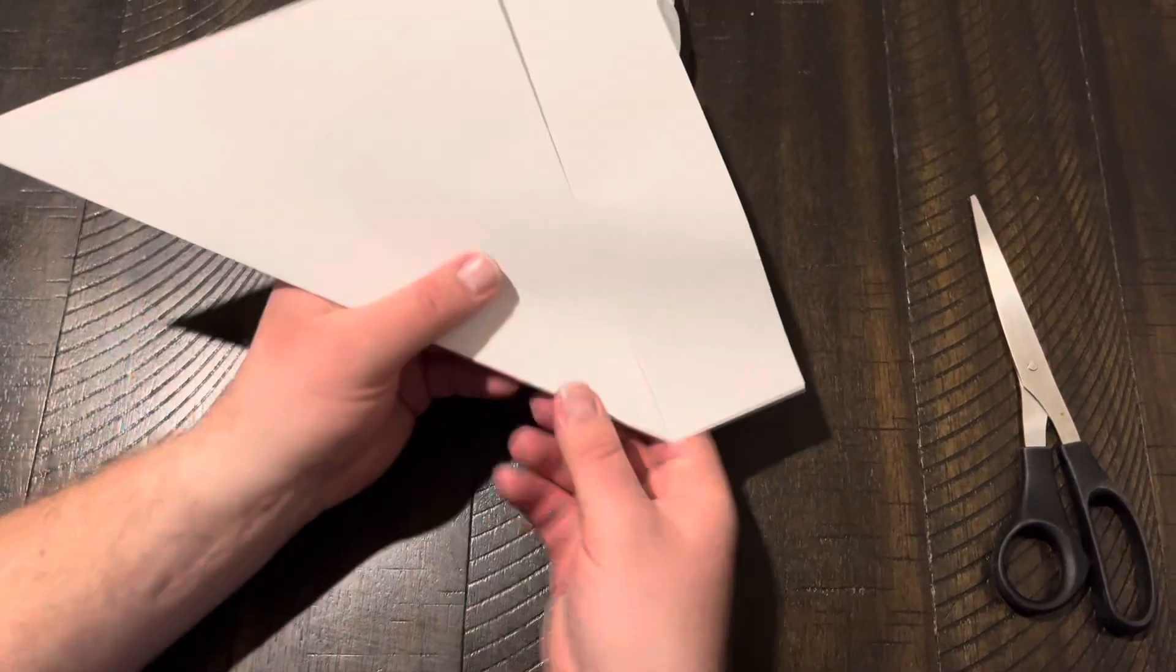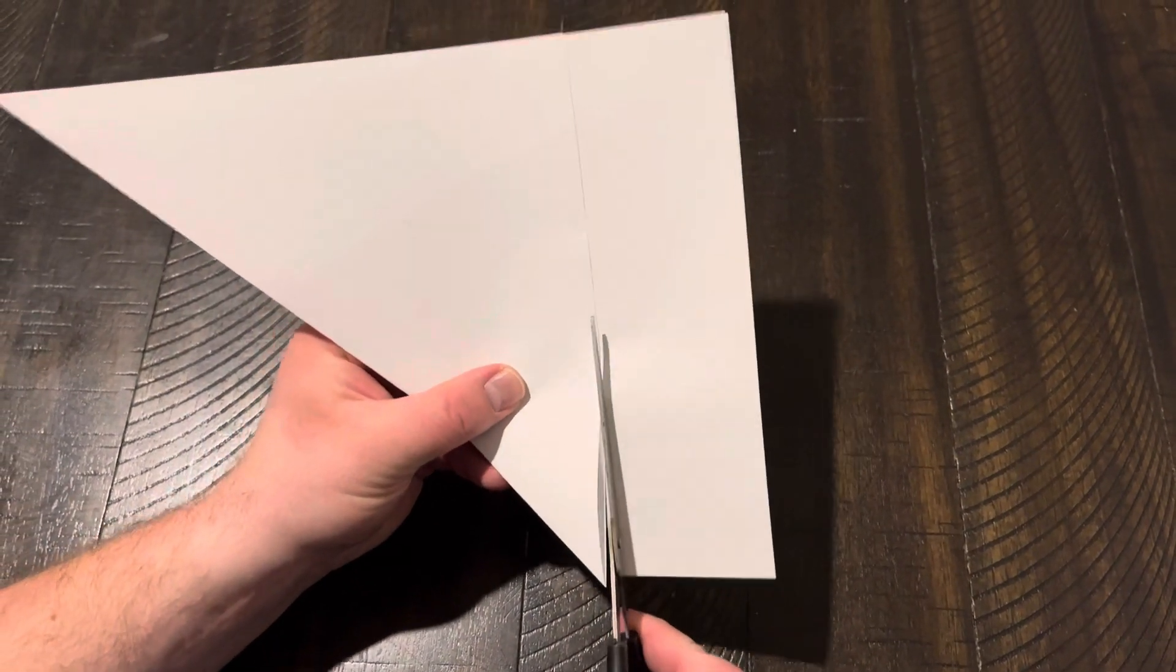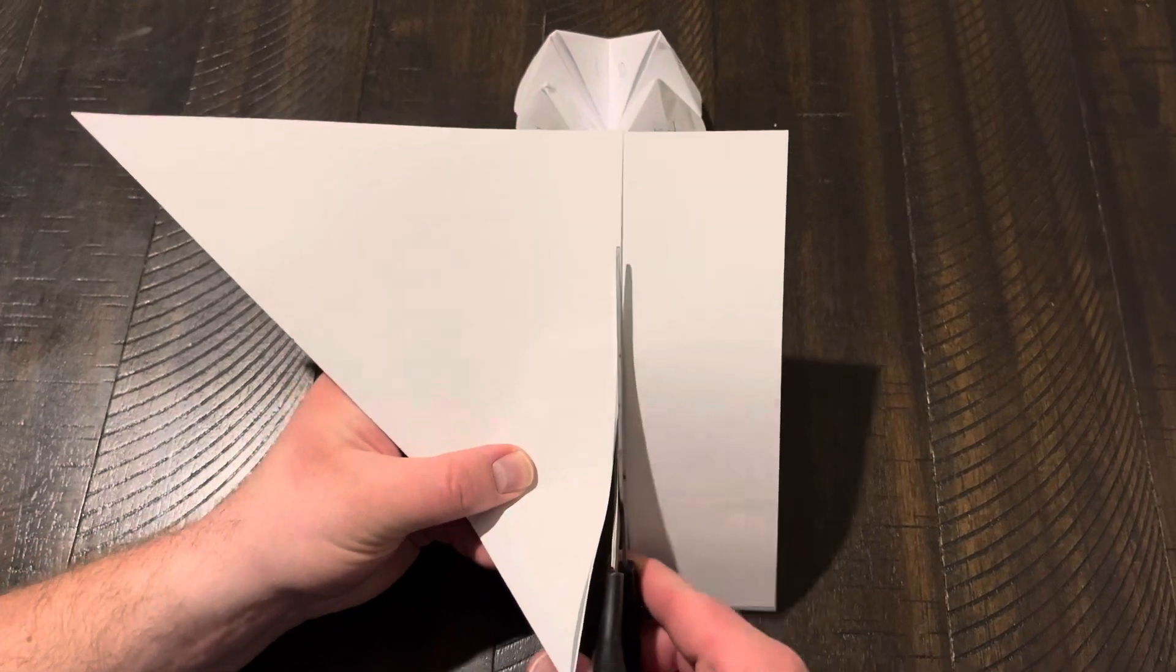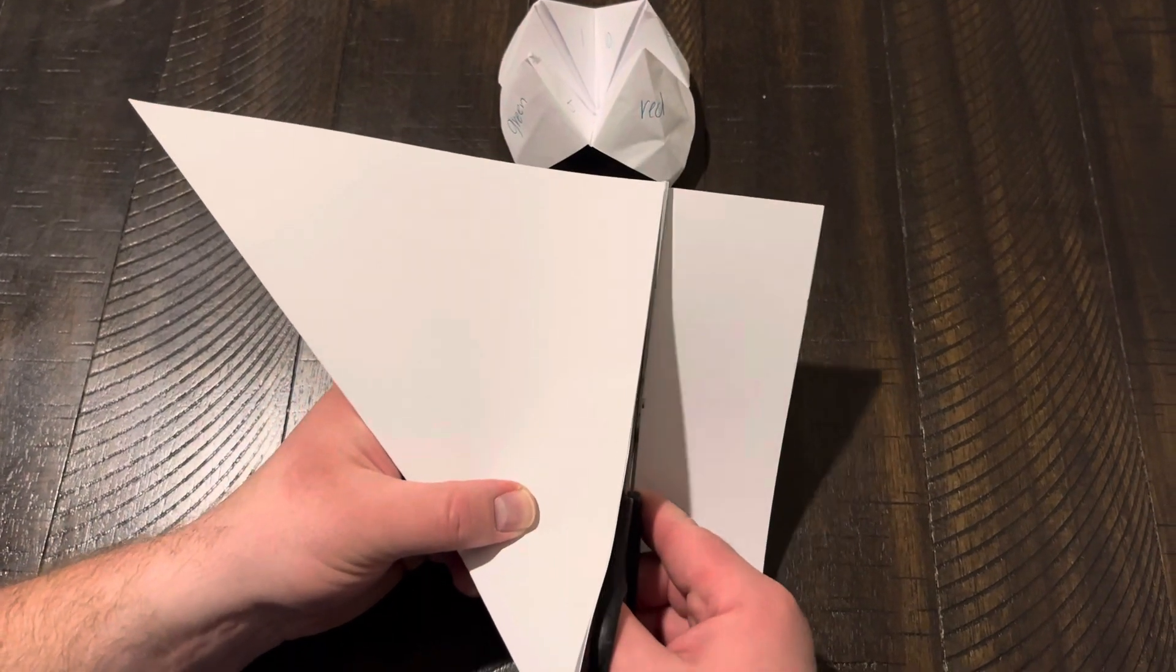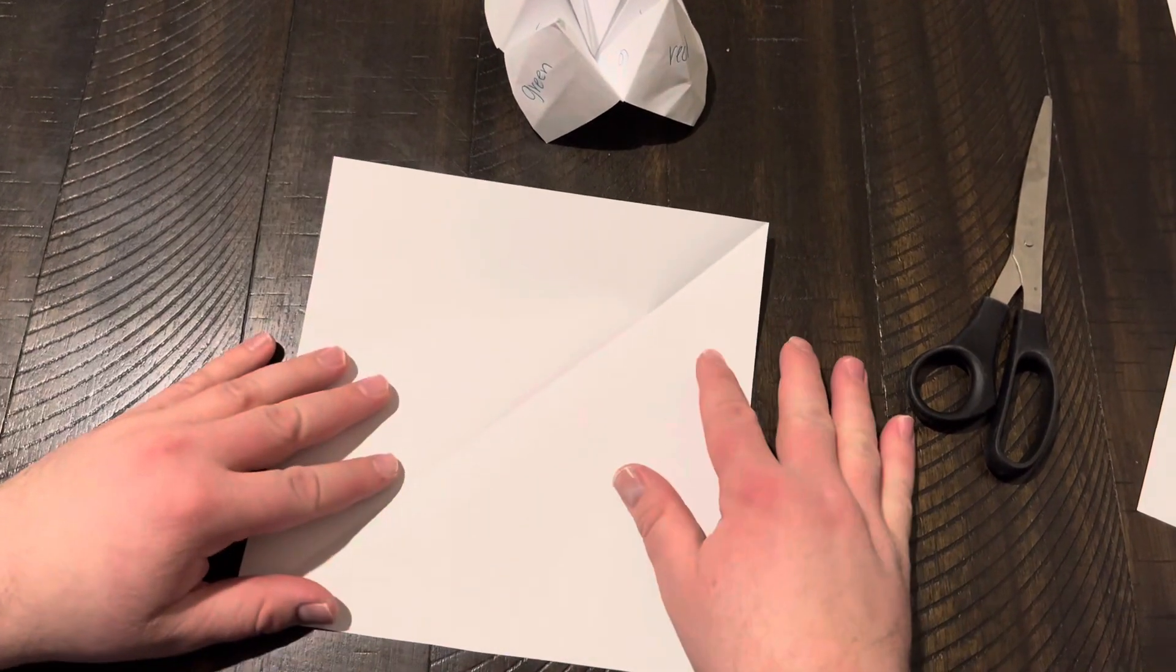Then you're gonna get a pair of scissors and just cut right along this edge like so. And now when you open it, you've got yourself a nice square paper.